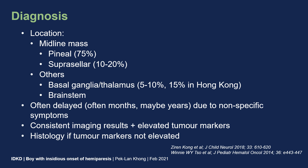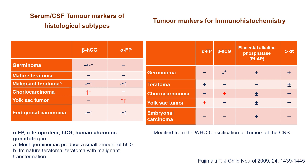The diagnosis of germ cell tumors is often delayed due to non-specific symptoms. However, it can be made based on consistent imaging results plus finding of elevated tumor markers; if markers are not elevated, histology is recommended. For germinomas, serum tumor markers are typically not increased, although quite often there is a low-grade increase in beta-HCG, as opposed to the other subtypes of germ cell tumors where there may be a marked increase in serum tumor markers.